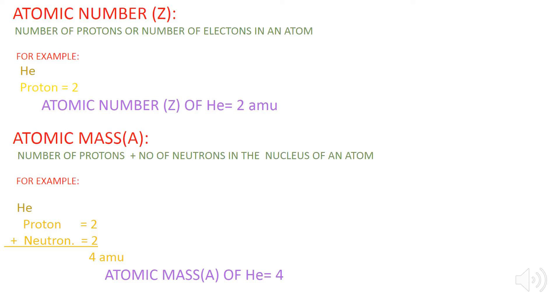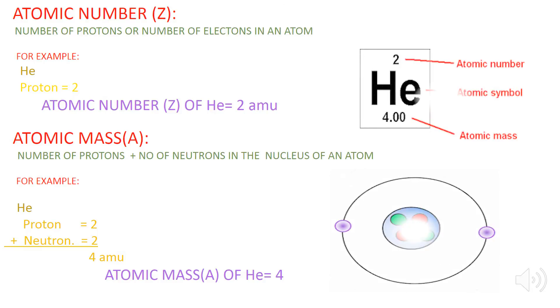Atomic number is also known as proton number. It is denoted by Z. It is the number of the protons or the number of the electrons in an atom. If we look at the periodic table.